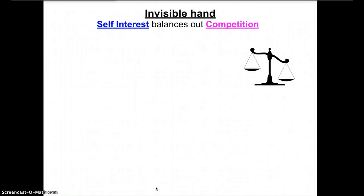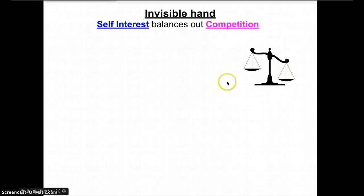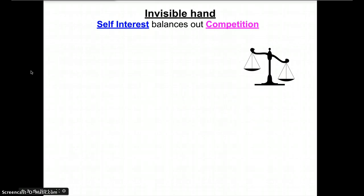The first key concept — and probably the most important concept about Adam Smith in terms of how he explains the success of capitalism — is called the invisible hand. Think of the invisible hand like a scale and balance, with two competing components: self-interest, which is balanced out by competition. Let's explain what each of these concepts means.